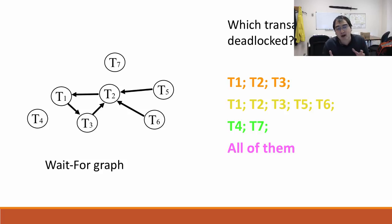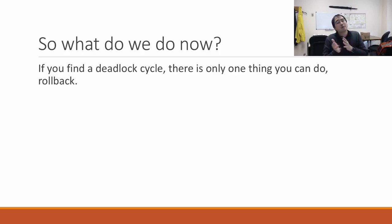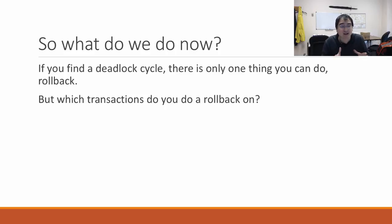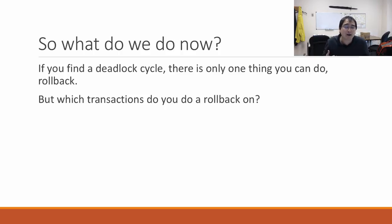We've found our deadlocked transactions — how do we fix it? There's really only one thing we can do, and that's roll back transactions. But which transactions should you roll back? You need to roll back at least one of the transactions in your deadlock cycle. How do you determine which transactions are in a deadlock cycle? You can construct a wait-for graph, which is a bit challenging at times.